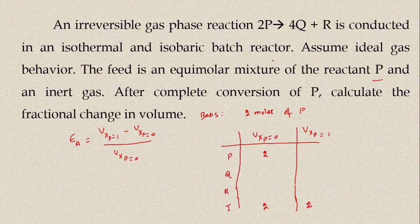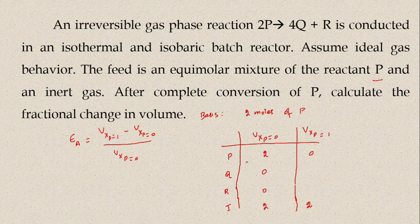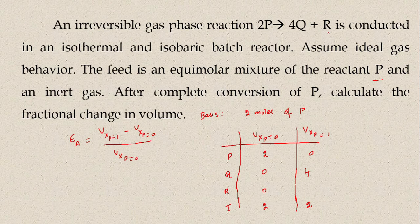We don't have any product at the start of the process, so I will put 0 for Q and R at Xp = 0. At complete conversion, all the P will be converted into products, so I will have 0 moles of P. Whenever 2 moles of P react, it gives 4 moles of Q. Therefore, number of moles of Q will be 4 at complete conversion. Whenever 2 moles of P react, it gives 1 mole of R.